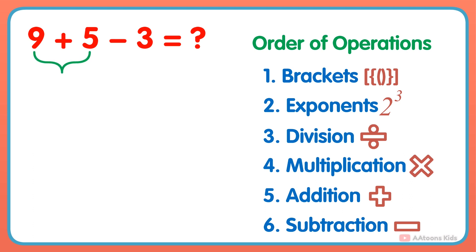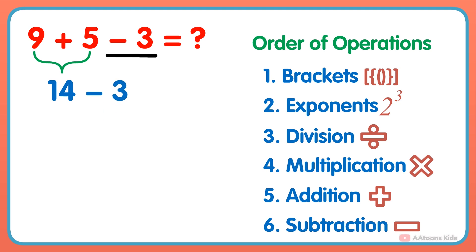In this problem, two operations — addition and subtraction — are given. So according to the order, we would first perform the addition: 9 plus 5 gets 14. And next, subtract 3 from the result, and you will get your answer: 14 minus 3 equals 11.